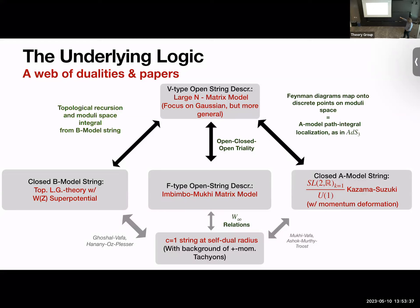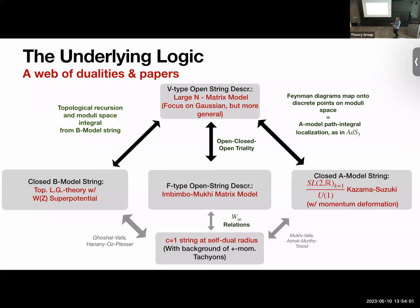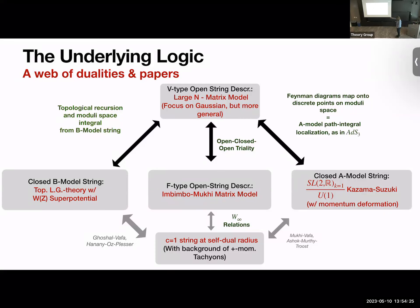We basically think of this intermediate model as a crutch: we start here, go to this other open string description, and that guy we know what it describes — via integrability, it encodes correlation functions of a specific string theory. People then asked why it's solvable, whether some underlying topological string explains this. That was answered positively: work by Mukhi and Vafa rewrote this theory in terms of the A-model string, and work by Ghoshal, Vafa, Hanany, and Pasquier rewrote it in terms of the B-model string.